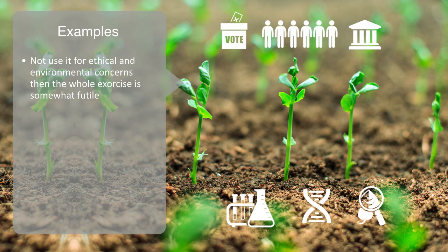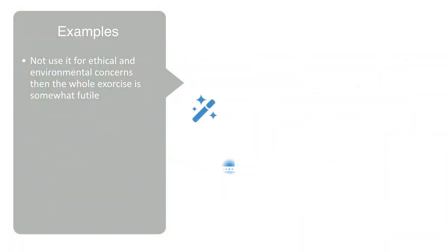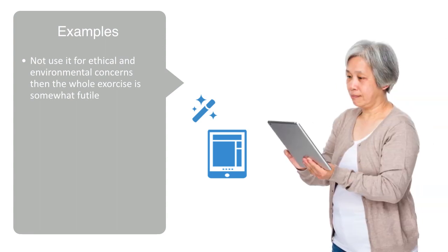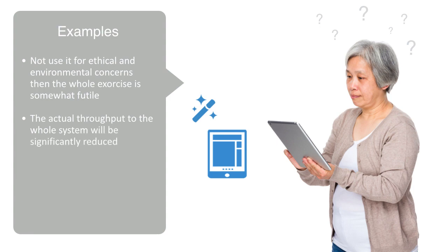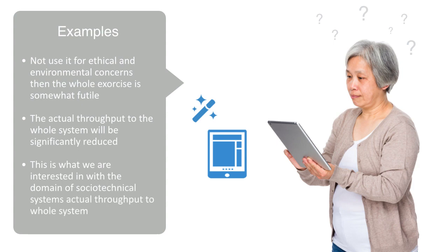Or to take another example, web developers in Silicon Valley may build software with all sorts of bells and whistles, expecting everyone to be tech-savvy. But if a large percentage of these users are in fact elderly and unaccustomed to the interface, then the actual throughput to the whole system will be significantly reduced. This is what we're interested in with the domain of socio-technical systems — the actual throughput to the whole system, not just its technical dimension.